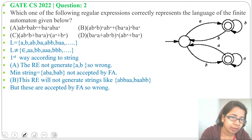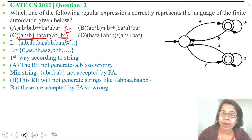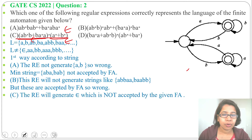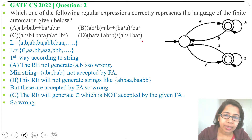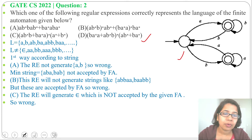Next option C: from the first part we can generate epsilon, and from the second part we can also generate epsilon. So this regular expression can generate epsilon, while epsilon is not accepted by this NFA — so option C is also wrong. Next option D: this one is the correct regular expression for this NFA. You can verify it with test strings. So the answer will be option D.